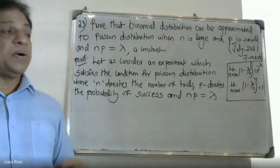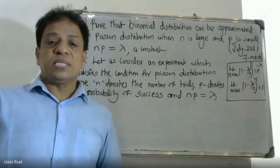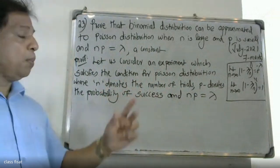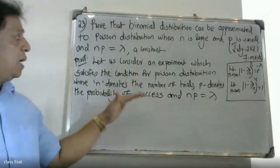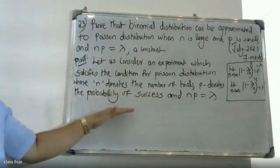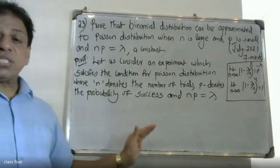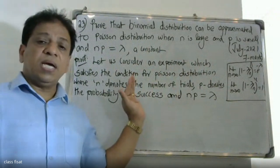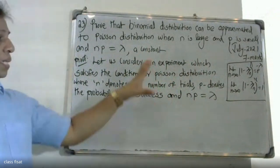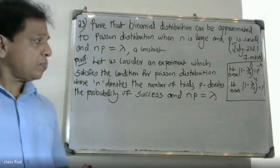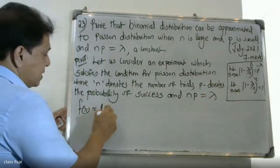Consider an experiment which satisfies the conditions for Poisson distribution, where n denotes the number of trials, p denotes the probability of success, and np is equal to lambda. Now the binomial distribution formula is nCx p raise to x q raise to n minus x.